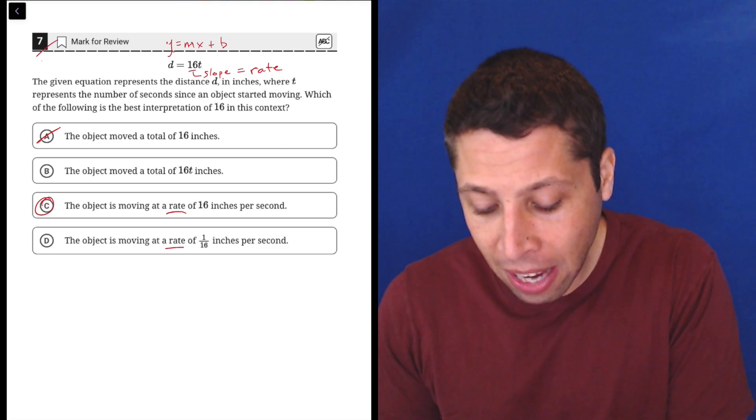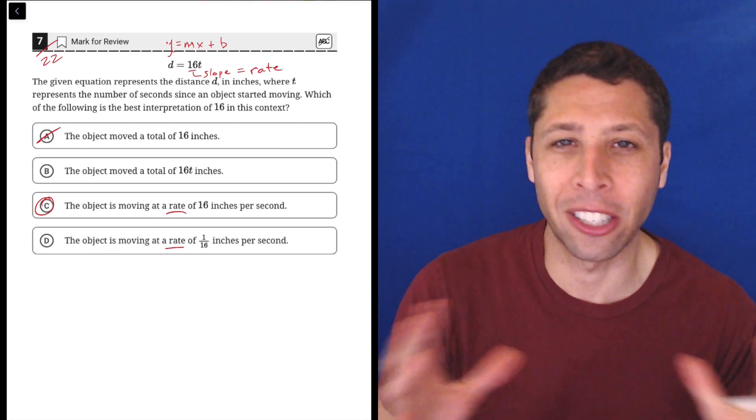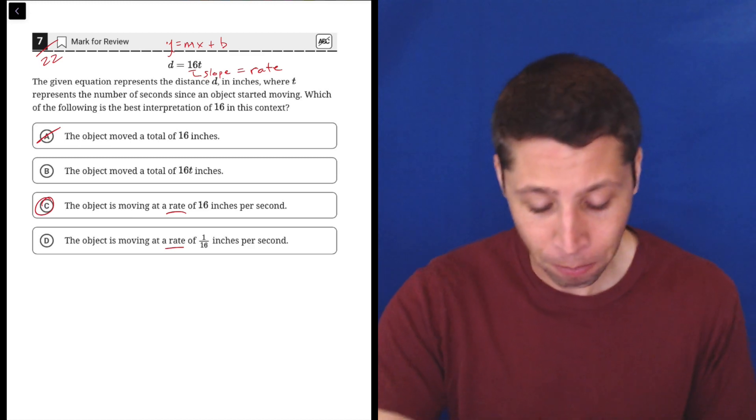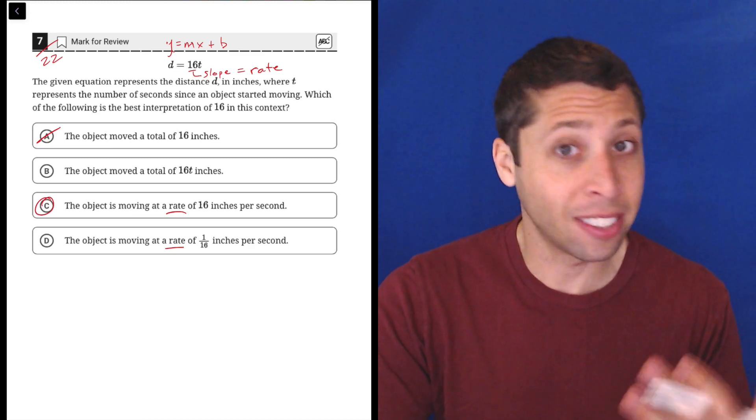C is the answer because 16 is the slope and it's the number that's there. This is question 7 out of 22, so we shouldn't expect a lot of shenanigans with the SAT tricking us at this point, so the straightforward answer is the correct answer.